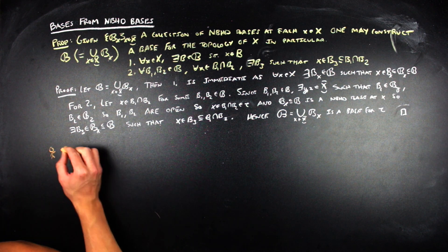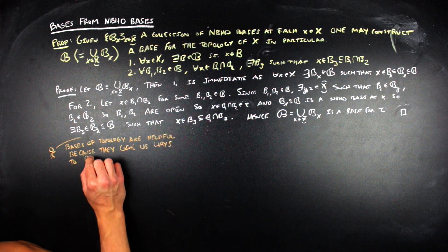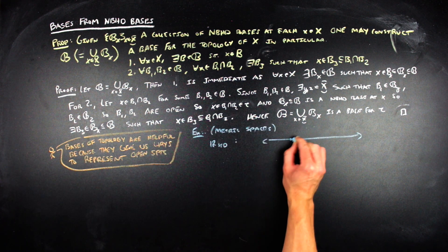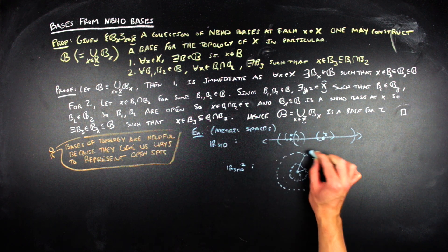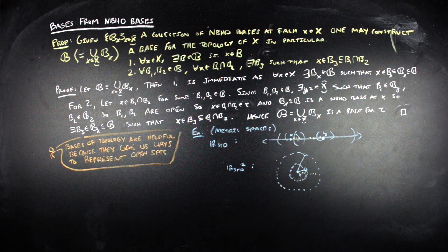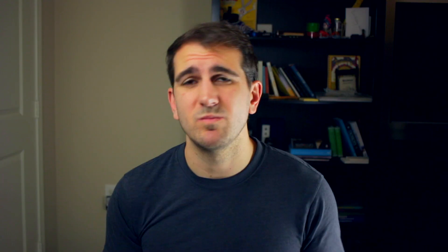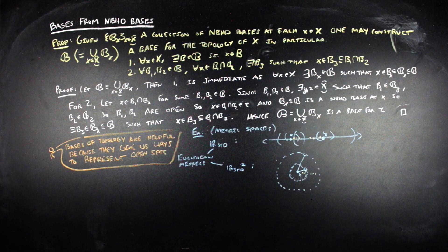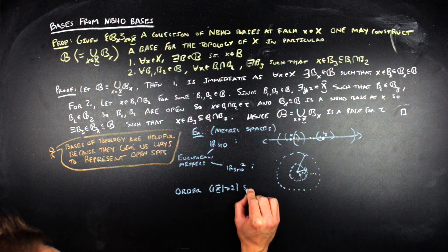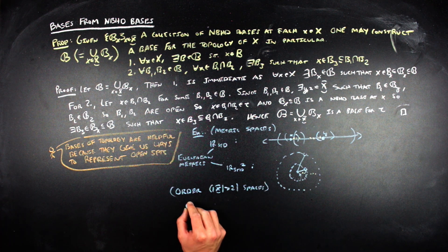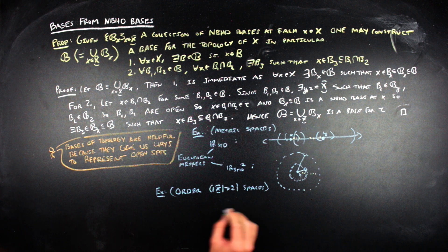Let's return to those more concrete examples. In the metric case, we look at balls around each point determined by the metric. In R1 standard, these are just the symmetric open intervals about each point, and in R2 standard, these are just the open discs about a point of a particular radius. Standard just implies we are working with the Euclidean metric, but in general you can choose any metric. In the order case, we look at all of the order-based intervals around a point, and we give special attention to the smallest and largest elements because there's some weirdness that can happen there.